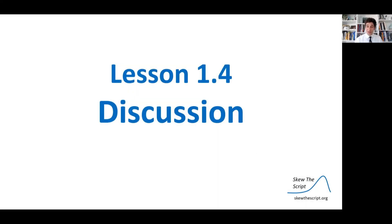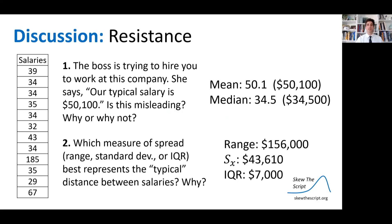Let's return to those discussion questions. The boss is trying to hire you and says our typical salary is $50,100 — is this misleading, and why or why not? And which measure of spread is the more typical one: range, standard deviation, or IQR? We're talking about mean versus median and which is more representative. We'll talk about it more in class. That's it for today, statisticians — we'll see you next time.